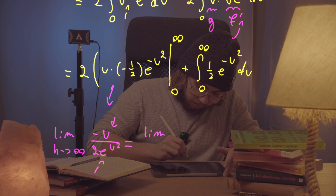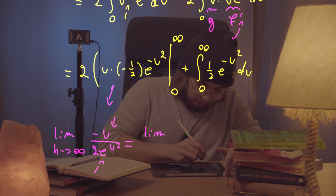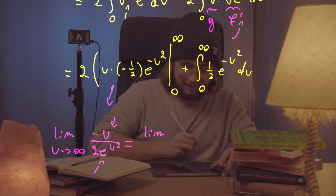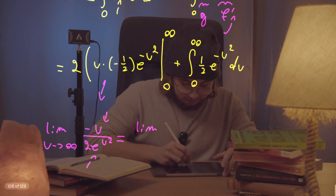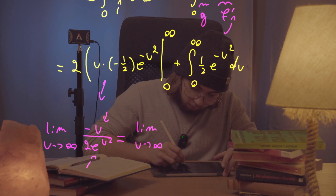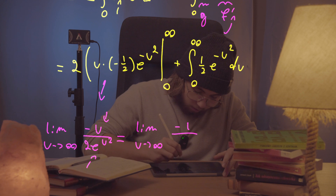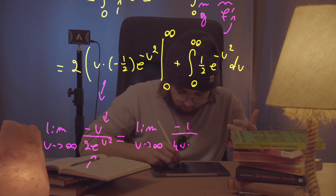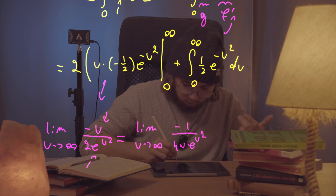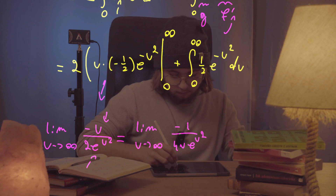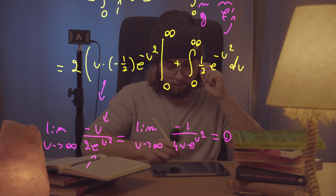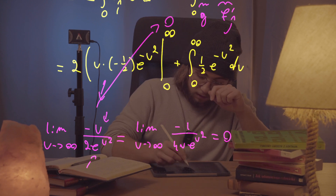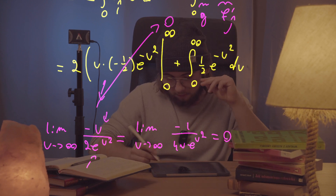What we get is the limit as u approaches infinity of negative one over 4u times e to the u squared. That's clearly going to be zero, so we don't care about this boundary term — it equals zero.